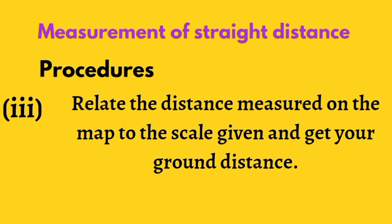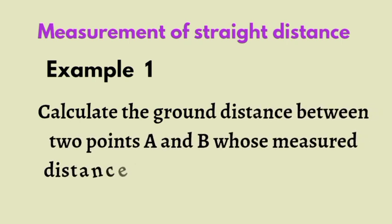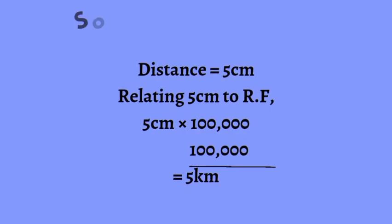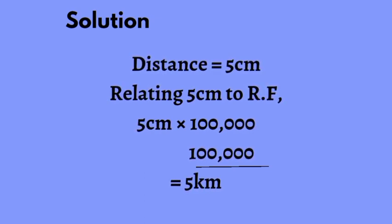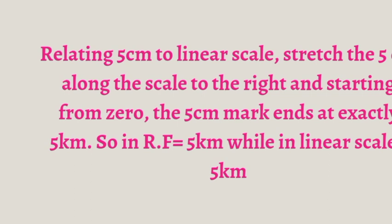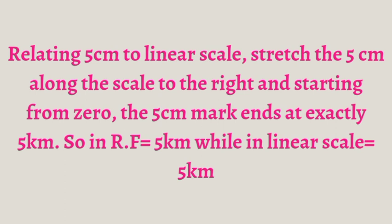That gives you the ground distance. Now let's look at an example: calculate the ground distance between two points A and B whose distance is 5 centimetres, and the scale of the map is 1:100,000. The measurement and scale are given in RF form. We bring out the distance and the scale, then multiply the distance by the scale denominator and divide accordingly, and that gives us 5 kilometres. We can relate this to the linear scale or RF, which means 1 centimetre represents 5 kilometres.